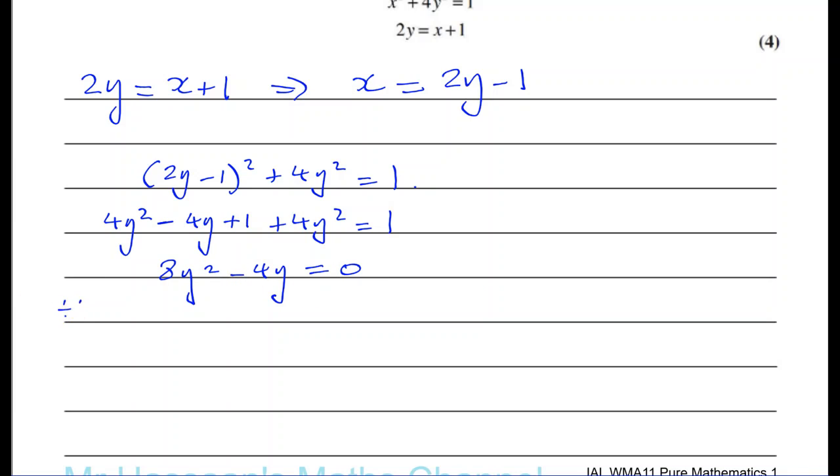I can divide both sides by 4, not by 4y, because if I divide by 4y, I'll lose one of the solutions. I'll end up with 2y squared minus y equals 0. I can take out the common factor, which is y, and I'll have 2y minus 1 equals 0. I have, therefore, y equals 0. y equals 0 is one solution, and y equals a half as the other solution, because 2y minus 1 is 0. So that's half of the answer.